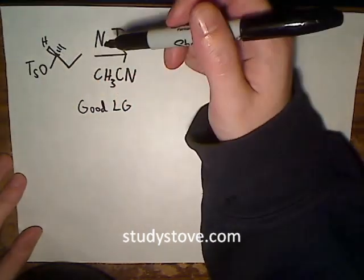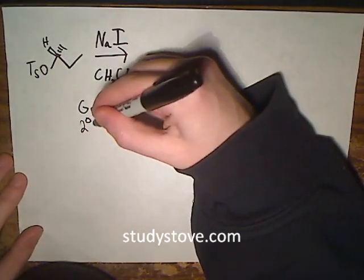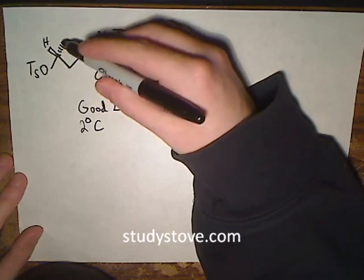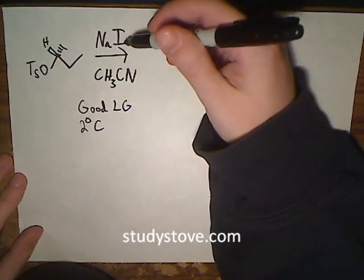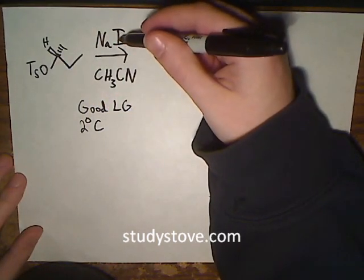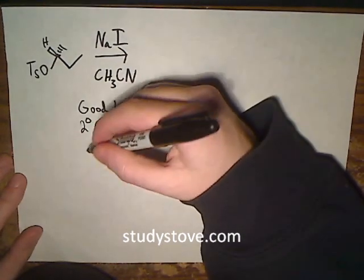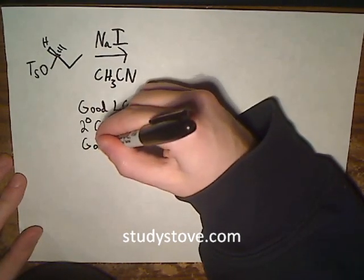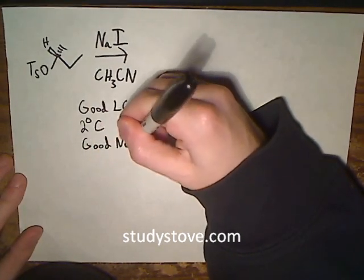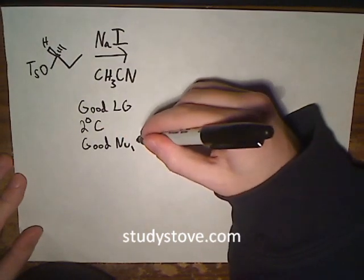We have this tosyl group attached to a secondary carbon, and we also have sodium iodide. So we're going to have the iodide ion as a nucleophile. We know that iodide is a very good nucleophile and it is a weak base.